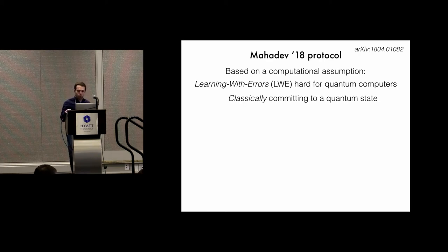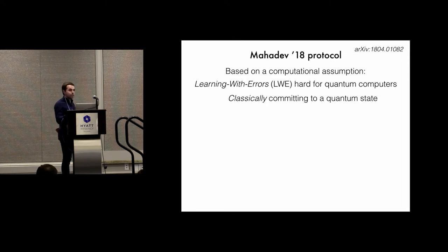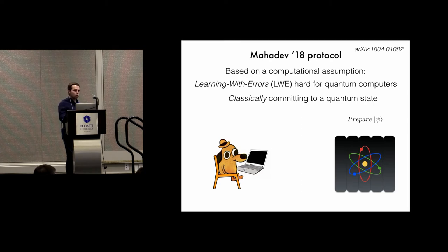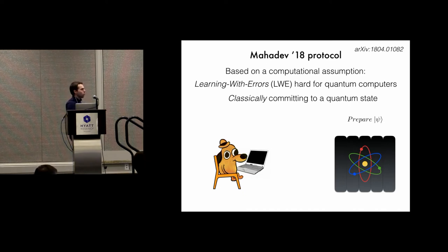I'm not going to go through all of her protocol, but I'll mention the key feature that is also relevant in our setting: she basically designs a scheme for classically committing to a quantum state. So these are our two parties — the verifier and the prover — and the prover has a single qubit state, which we denote as psi. What we're going to try to do is essentially force the prover to commit to this quantum state. The commitment will be classical — just a classical bit string — and when we open the commitment, it's going to involve measuring the quantum state.